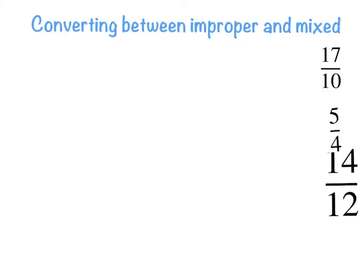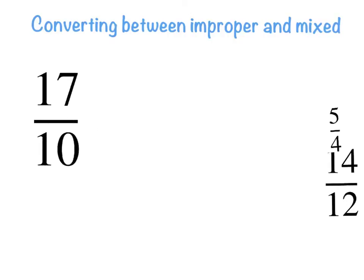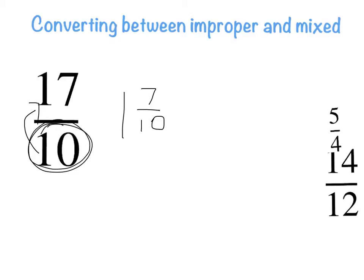One last example: seventeen over ten. How many times does ten go into seventeen? Once, with a remainder of seven. My original denominator is ten, so the answer is one and seven tenths. Simple as that.